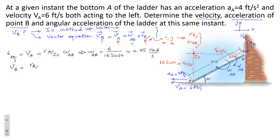Finding velocity at point B is now straightforward: VB equals R_B/IC times omega_AB. R_B/IC equals 16 cosine 30, so VB equals 16 cosine 30 times 0.75, which equals 10.39 feet per second. If you go through the vector method you will end up with the same numbers for both the velocity of B and the angular velocity of the link.